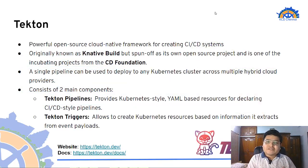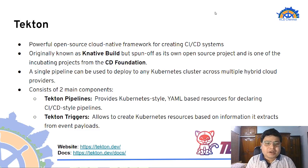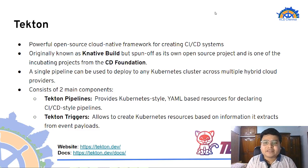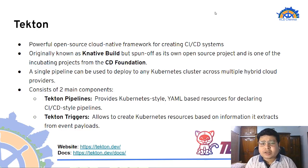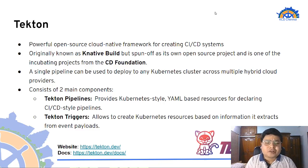We've understood how to deploy serverless applications on Kubernetes with Knative, but now we need a CI/CD system to automate this deployment process — and that's where Tekton comes in. Tekton is a powerful open-source cloud-native framework for creating CI/CD systems. Originally known as Knative Build, it spun off as a separate project and is now one of the incubating projects from the CI/CD Foundation. Tekton is cloud-native and can be deployed on any Kubernetes cluster across multiple hybrid cloud providers. It is made up of two main components: Tekton Pipelines and Tekton Triggers. Tekton Pipelines provides Kubernetes-style YAML-based resources for declaring CI/CD pipelines, while Tekton Triggers helps create Kubernetes resources based on event payload information.